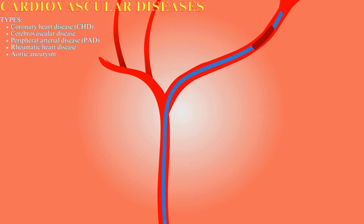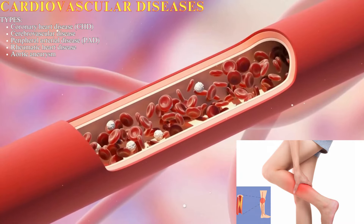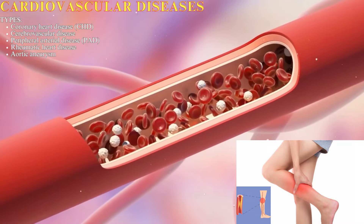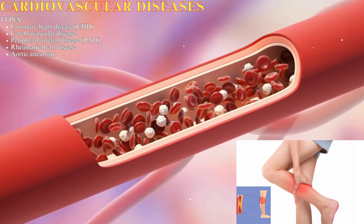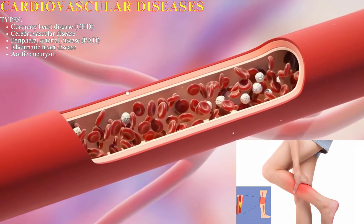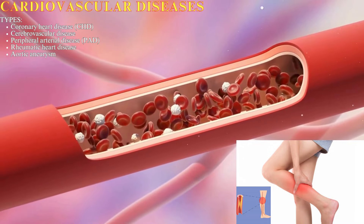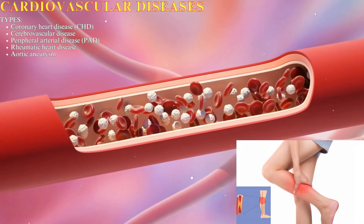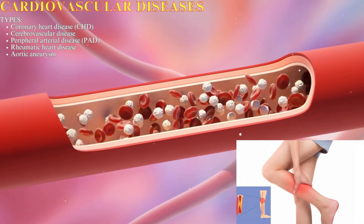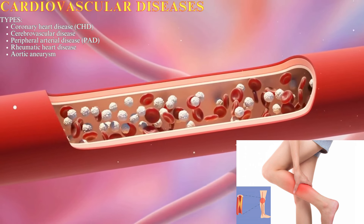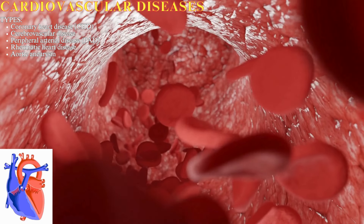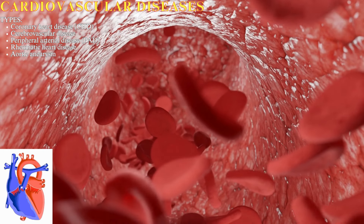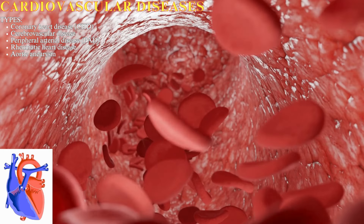Stroke can cause lasting damage to the brain and can lead to paralysis, speech problems, and difficulty thinking. Peripheral arterial disease, or PAD, causes narrowing of the arteries in the legs and feet. PAD can cause pain, cramping, and numbness in the legs. In severe cases, PAD can lead to amputation.